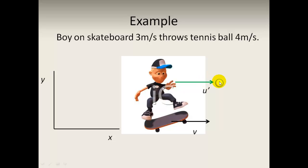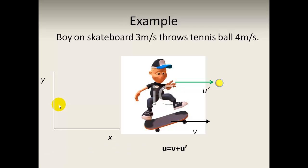How fast is that ball going relative to me? It's easy to see that it's going to be his speed, which is three, plus the ball's speed, which is four — giving seven metres per second away from me. This is the Galilean transformation: my measured velocity is V, the velocity of the frame of reference, plus u prime, the velocity of the ball as measured in the other frame of reference.